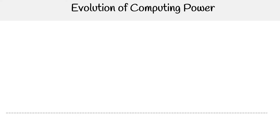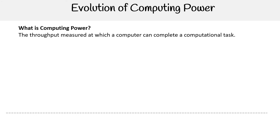Hey, this is Andrew Brown from ExamPro, and we are looking at the evolution of computing power. Computing power is the throughput measured at which a computer can complete a computational task, and Google has a variety of offerings for the innovations in this particular field.